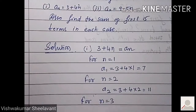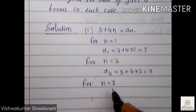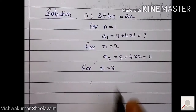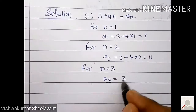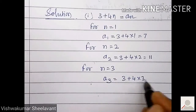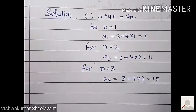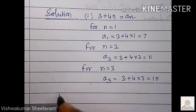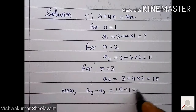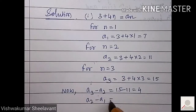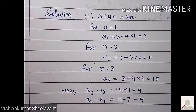Now for n equal to 3, a3 equal to 3 plus 4 into 3, that is 15. Now, a3 minus a2 is 15 minus 11, that is equal to 4. And a2 minus a1 is equal to 11 minus 7, that is also equal to 4.